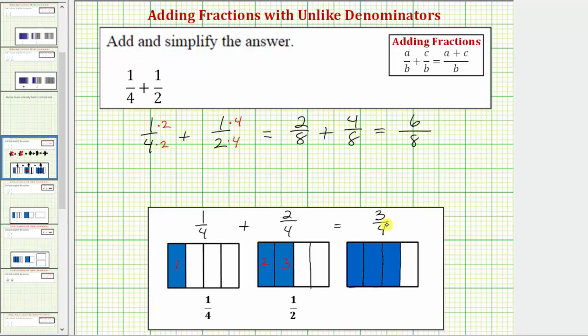So 6 eighths is equivalent to 3 fourths, but it does simplify, because 6 and 8 share a common factor of 2. To show the factor of 2, we could write 6 as 2 times 3 and 8 as 2 times 4, where 2 divided by 2 simplifies to 1, giving us the same sum of 3 fourths.